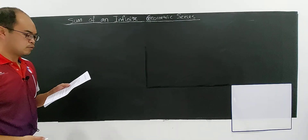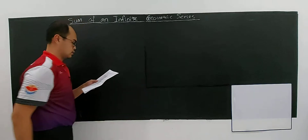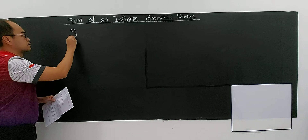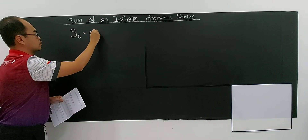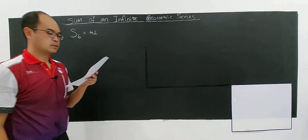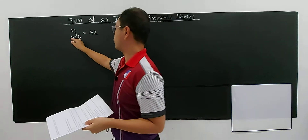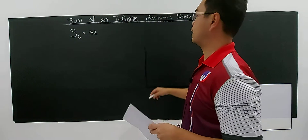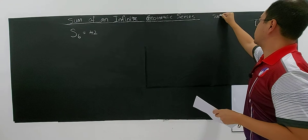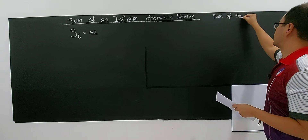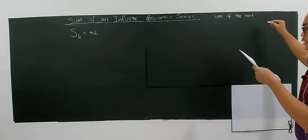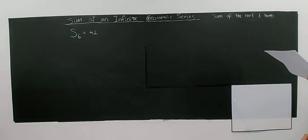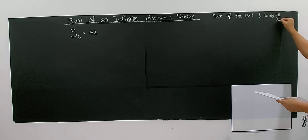The question gives a geometric sequence such that the sum of the first six terms is 42. The first information is S6 = 42. Then followed by the sum of the next six terms, which is 21 over 32. You have to understand the meaning of 'sum of the next six terms'.